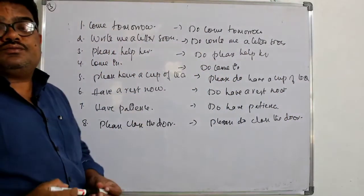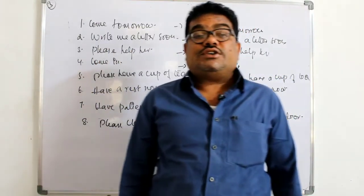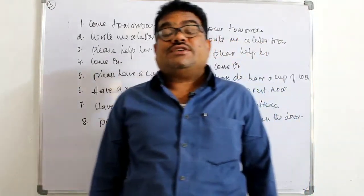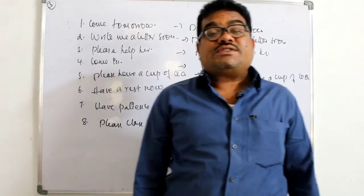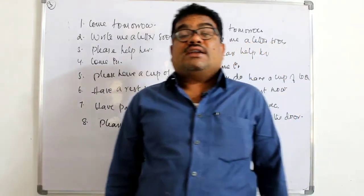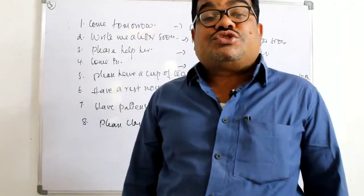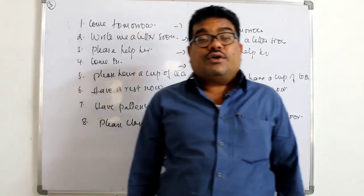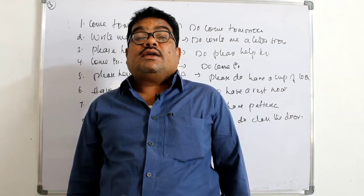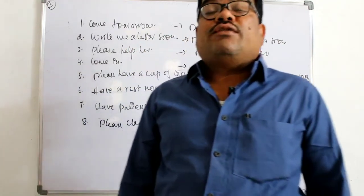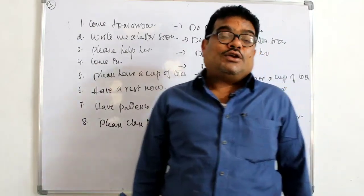I have told you three types of sentences which we can change into emphatic sentences. The first was simple present and simple past tense. The second was where has, have, or had is used as the main verb. The third was how to make imperative sentences into emphatic sentences. We will meet in the next video — until then, goodbye.